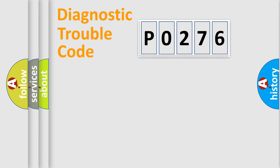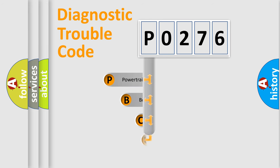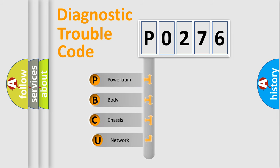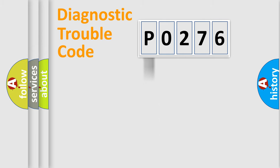First, let's look at the history of diagnostic fault code composition according to the OBD2 protocol, which is unified for all automakers since 2000. We divide the electric system of the automobile into four basic units: Powertrain, Body, Chassis, and Network.